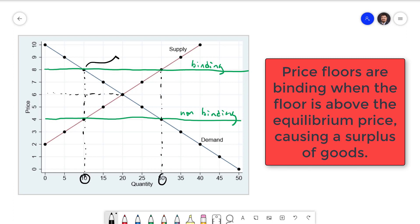At 8 we have a quantity demanded of 10 and we have a quantity supplied of 30. The difference between those is a surplus. That is an excess of goods. Since 30 units are supplied, 10 units are demanded, the surplus will be 20 units.